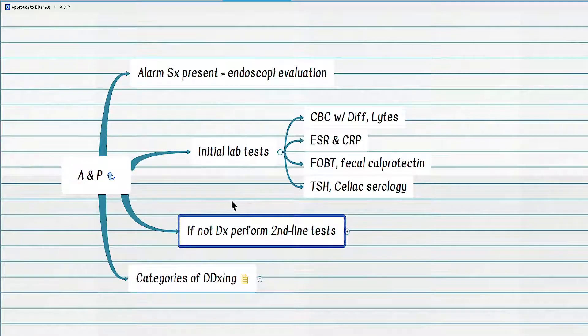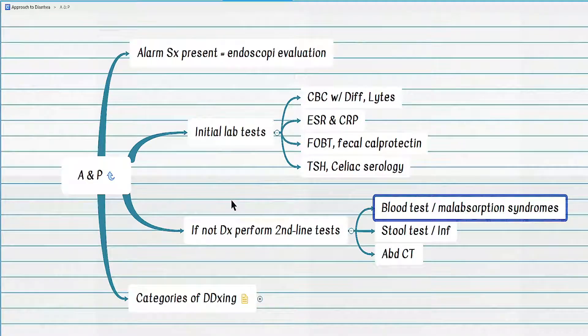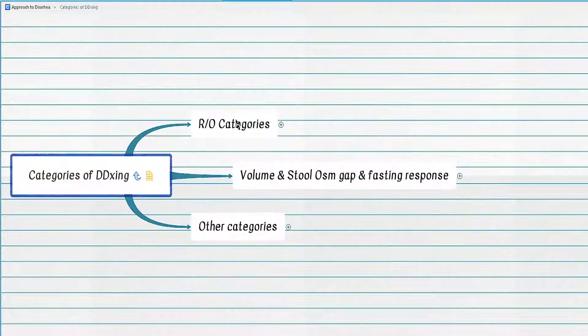If neither the initial endoscopic evaluation nor the initial lab tests are diagnostic, the next step is second-line testing, which typically includes advanced imaging such as abdominal CT, stool tests for different types of infection, and blood tests for malabsorption syndromes.